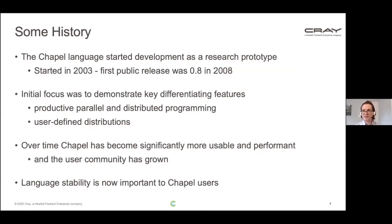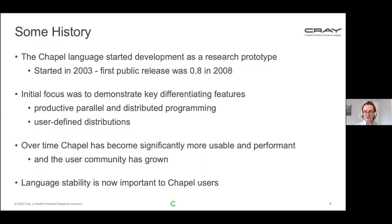So back to our Chapel project. When Chapel started out, it began as a research prototype in 2003 and then eventually made its first public release in 2008. Initially, the focus was just to demonstrate the key differentiating features of Chapel, like productive parallel and distributed programming and user-defined distributions. At that time, language stability wasn't important at all — in fact, it would not have been a good idea to try to stabilize then because things weren't really solid yet. But over time, Chapel has become significantly more usable and performant, and the user community has grown, so now language stability is important to our users.